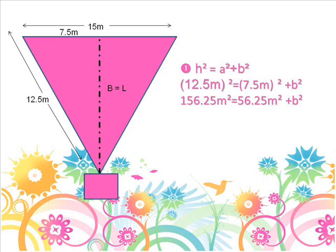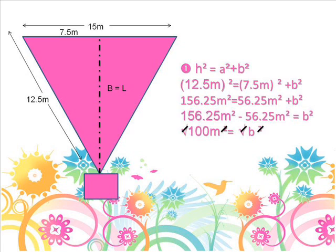The next step is to square everything, including meters. To find b, we will subtract 156.25 meters squared by 56.25 meters squared. The answer is 100.